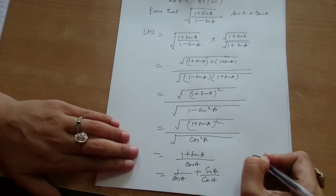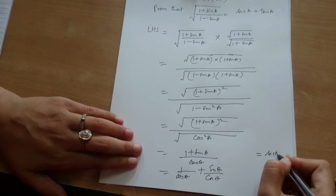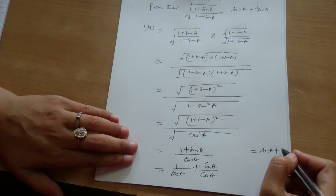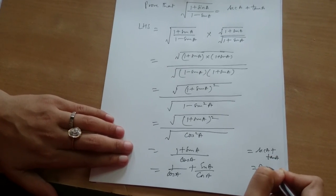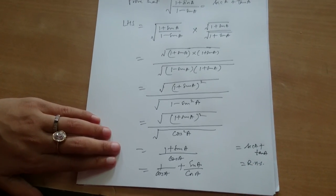Ma'am it is secant A. Secant A plus what is sin A upon cos A? That is tan A and this is the right hand side. So now we can see that LHS equals RHS. Okay. Good.